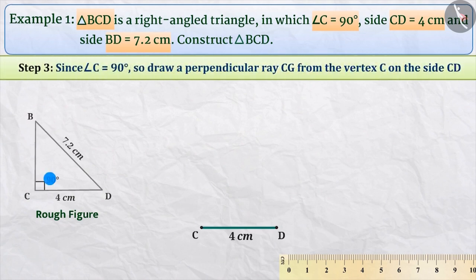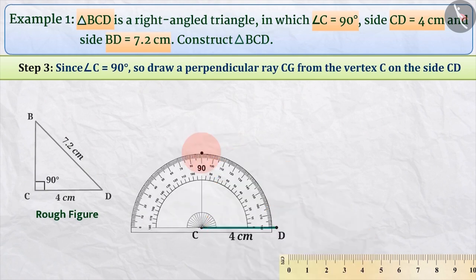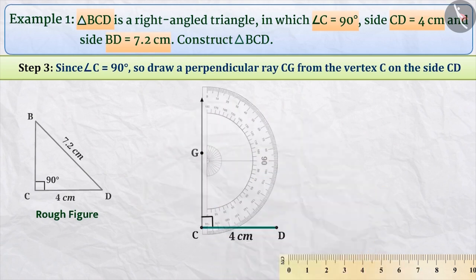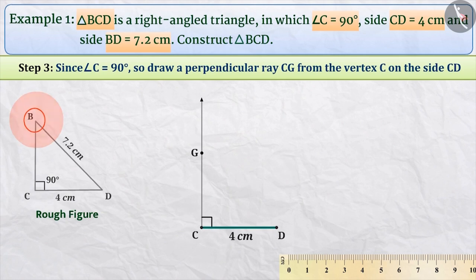Step 3: The measure of angle C is 90 degrees. To draw an angle of 90 degrees, we will draw a perpendicular line from vertex C on side CD as ray CG. To draw a perpendicular, we can use a protractor or a ruler and compass. Vertex B of triangle BCD should be located somewhere on this perpendicular.